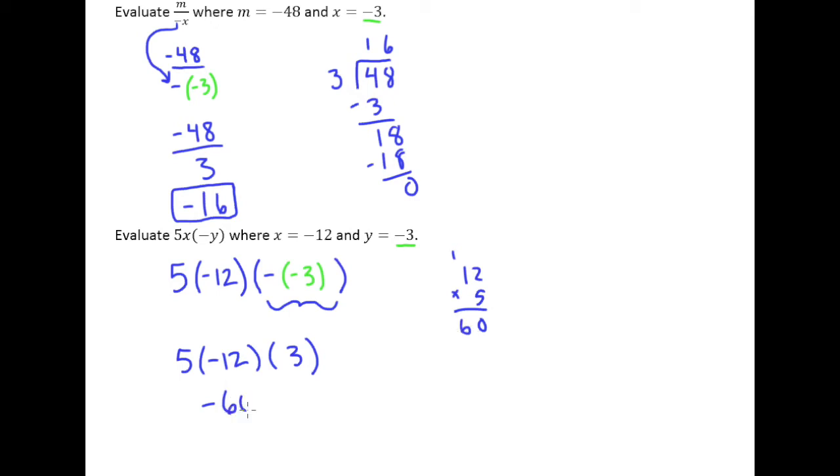So I have negative 60 times 3. And because this ends in a 0, I don't really need to do any long multiplication. I can just say 3 times 6 is 18. And then add a 0. And of course, since it's a negative times a positive, the product will be negative.